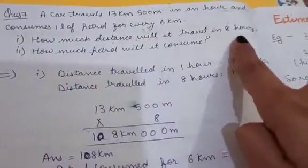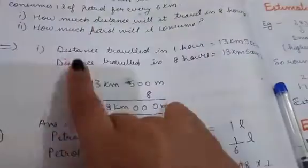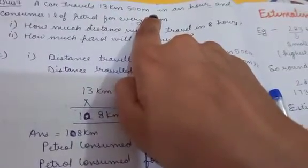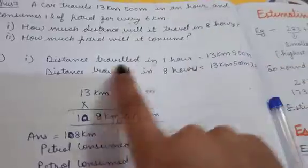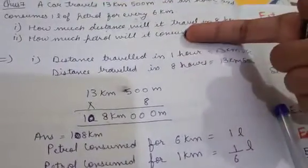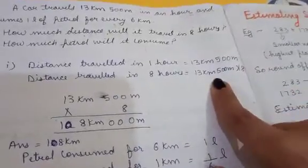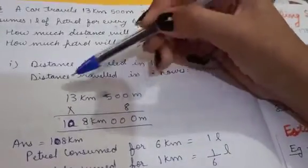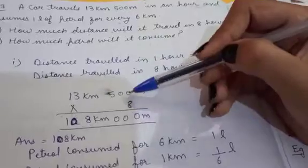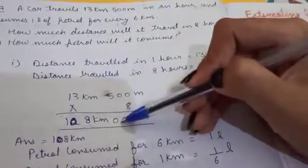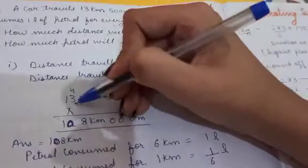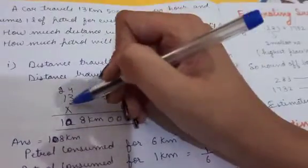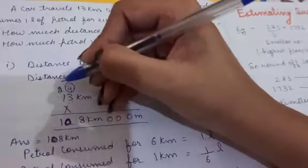Distance traveled in 1 hour is 13 kilometers 500 meters. To find the distance in 8 hours, since we are going from 1 to 8 (smaller to larger), we multiply 13 kilometers 500 meters by 8. Working through the multiplication: 8 × 500 = 4000, carry 4; 8 × 3 = 24 + 4 = 28, carry 2; 8 × 1 = 8 + 2 = 10. The distance covered in 8 hours is 108 kilometers.